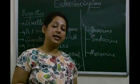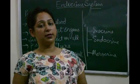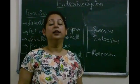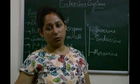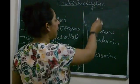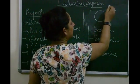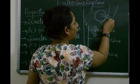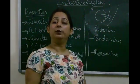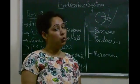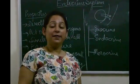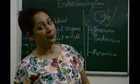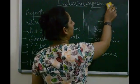Endocrine glands are the glands which directly pour their secretion into the bloodstream. They do not have any ducts to carry their hormone to the target organ. An endocrine gland is placed near a blood vessel and directly pours the hormone into the bloodstream. Because they do not have ducts, they are also known as ductless glands.